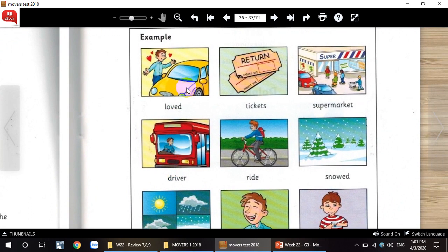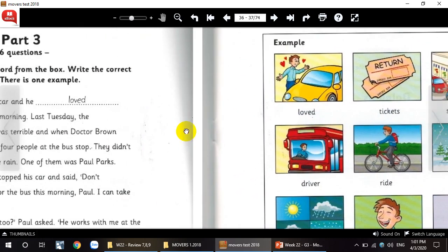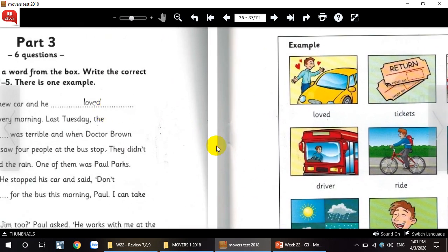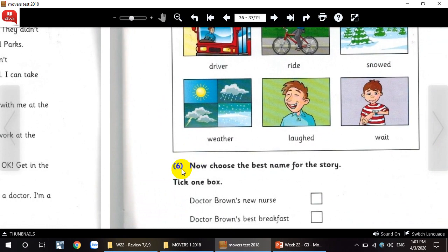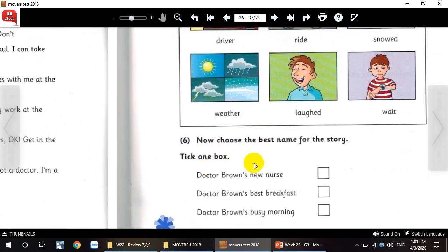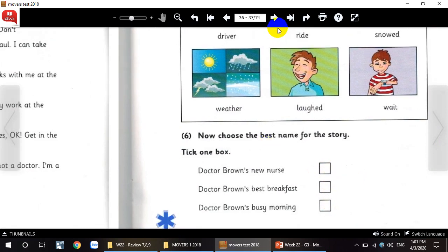Look at this picture here. And we will choose the best words for the blank here, right? And question number six, now choose the best name for the story. Tick one box. We have three choices here. And which one you choose, you tick one box. Please read at home.